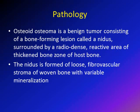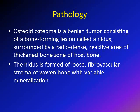So if this nidus of irregular interconnected bone forms in the tibia or in the proximal femur, for example, that host bone — the tibia or the proximal femur — is going to surround that nidus with an area of thickened bone as a reaction. So it's a benign bone-forming lesion composed of a nidus, which is woven, irregular, immature bone trabeculae. The host bone surrounds that nidus with a reactive area of thickened bone, as we're going to see in the X-rays.